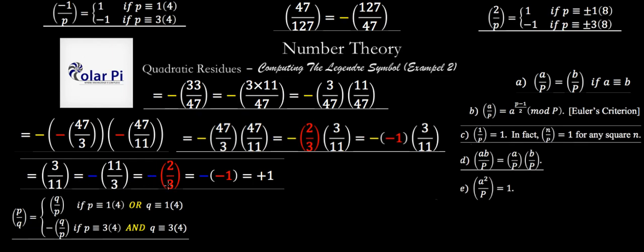And then 2 over 3 is going to be negative 1 because, again, 2 is a non-residue mod 3. Negative negative 1 is positive 1. Therefore, 47 over 127 is plus 1, which means that 47 is a quadratic residue mod 127. Okay, cool. This is it for example 2. And there will be one more example. Take care.